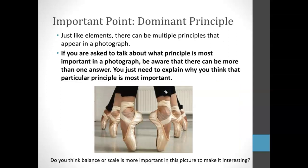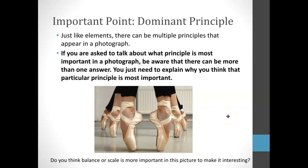Just like in our last learning target, we learned about how our eyes can see things differently, and the way that you see things can be right as long as you can really explain it and it is logical in your explanation. Here's another example photograph. Some of you may think balance may be more interesting in this image because of how there's equal spacing of one side versus the other — you could almost fold that picture in half and it would be the same on both sides. Some of you might think it's interesting that the feet closer to the camera are larger than the feet further away, and that's something called scale.